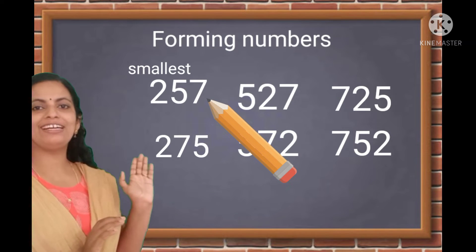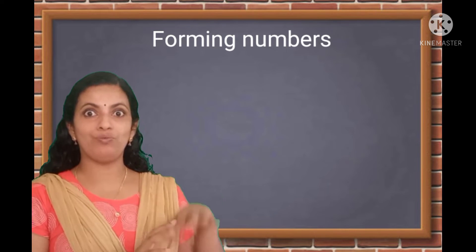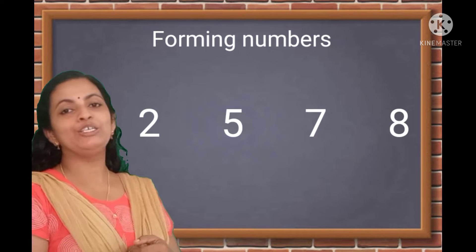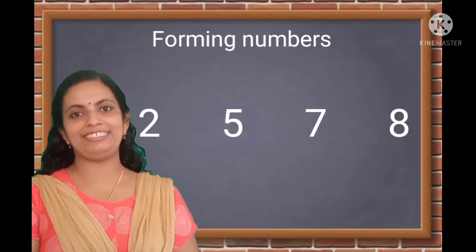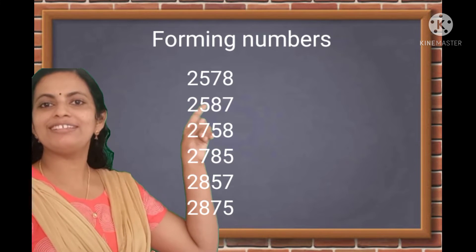Can we make four-digit numbers? Here are your digits: 2, 5, 7, 8. Now, form the numbers. Yes, 2578.